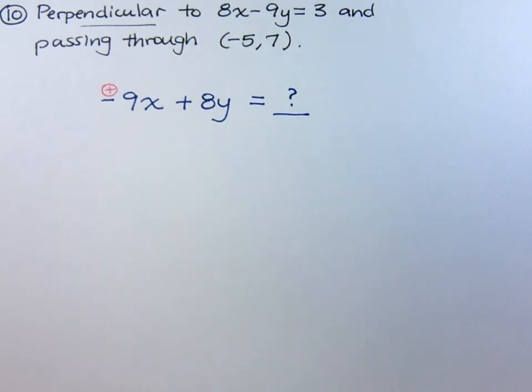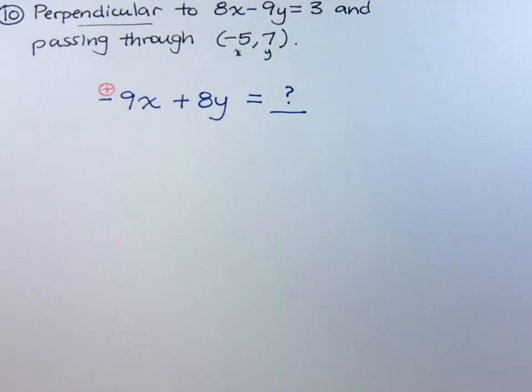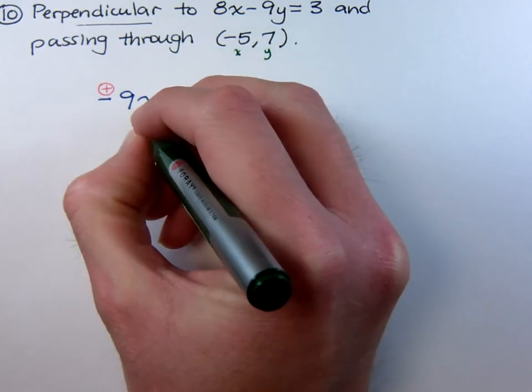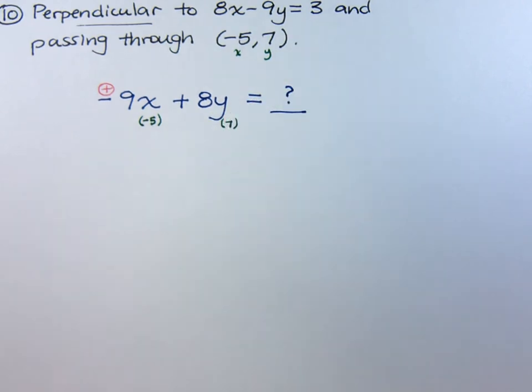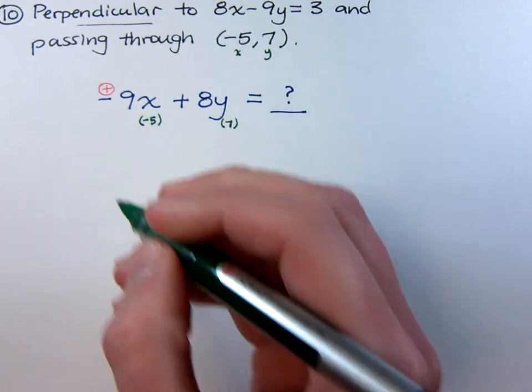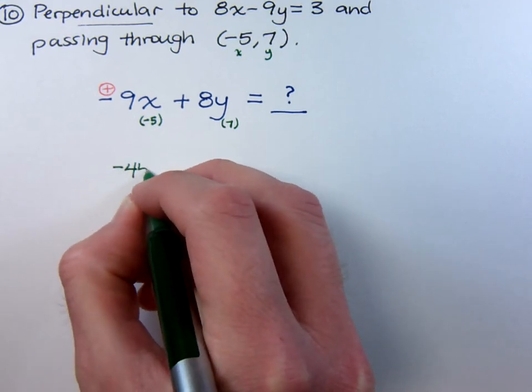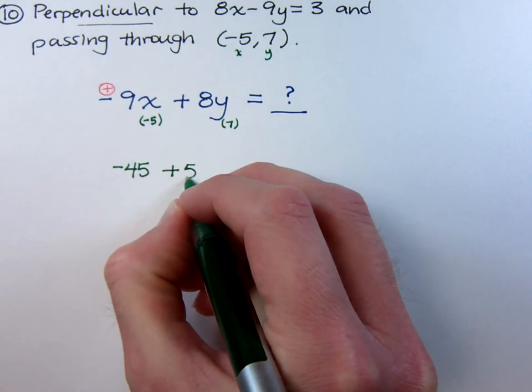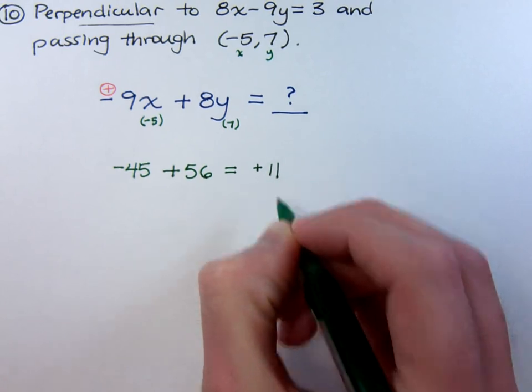Now, all you're going to do is use the x and y that were given to you and plug them in. So I'm going to plug in my negative 5 and my positive 7. When I do that, I've got a positive 9 times negative 5 is negative 45, plus 8 times 7 is 56, and this gives me a positive 11.